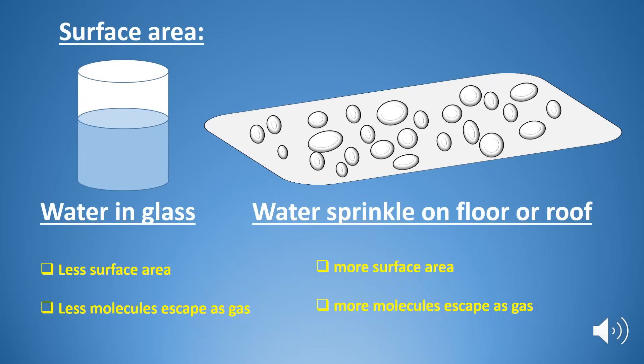Surface area is another factor. Since evaporation is a surface phenomenon, it depends upon the surface area — the more the surface area, the more the evaporation. For example, water in a glass takes more time to evaporate than if we spread the same water on the floor. This is because a greater surface area gives a greater number of liquid molecules the chance to escape into the vapor state, and hence a higher rate of evaporation.